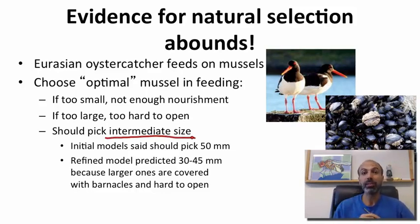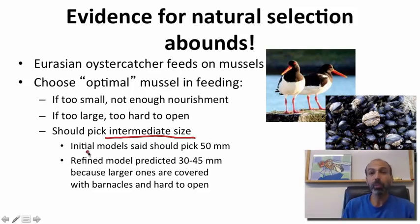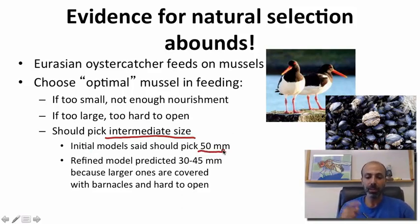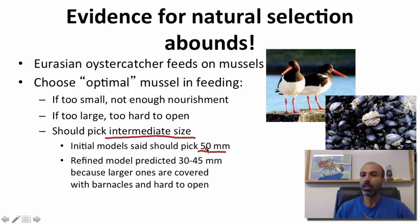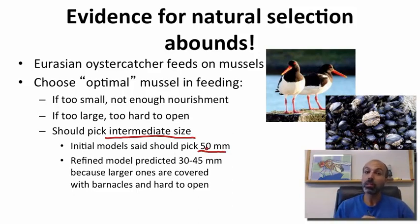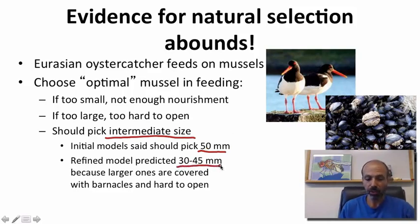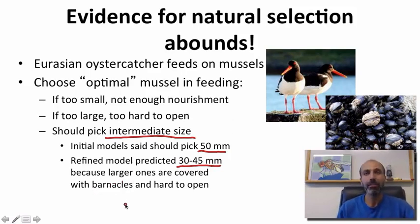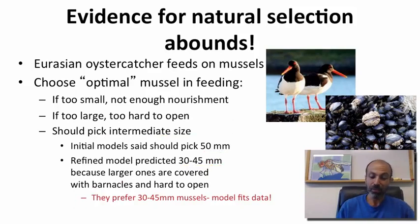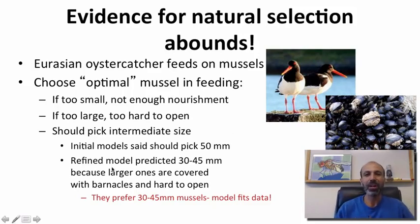So there should be some optimal intermediate mussel size that oyster catchers would be selecting, and that would, in principle, be selected by natural selection. People ran models and suggested oyster catchers should pick 50 millimeter mussels — that was the prediction. But there was not a good fit of the models to the data; the oyster catchers were actually picking smaller mussels. They refined the model and predicted 30 to 45 millimeter mussels because larger ones are covered with barnacles, making them harder to open. In fact, the birds do prefer 30 to 45 millimeter mussels, so with this revision the model fits the data.